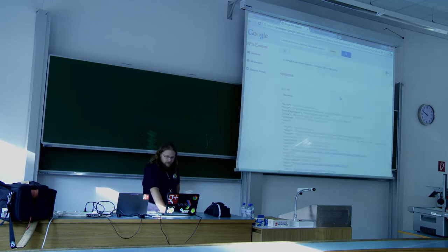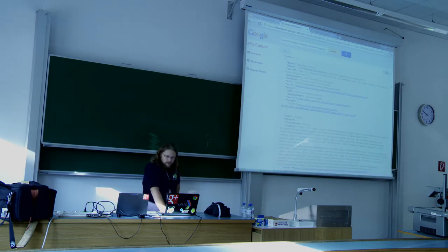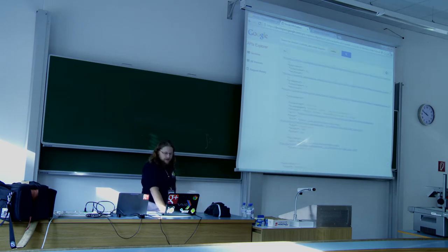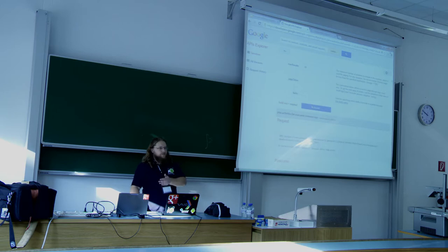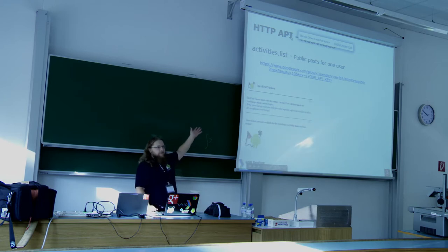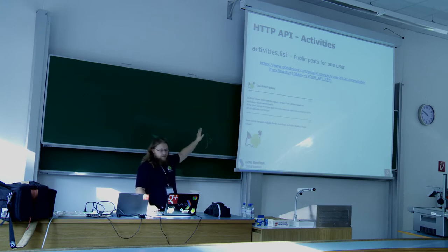When you execute this request you get a list of items — each item is a Plus activity. In this case I posted about the DevFest day yesterday. You see who posted it, the whole contents of the post, the number of plus ones, and any attachments. To get all the information visible in a Google Plus post you'd get it through the API. You can use this to render your recent activity on your website, since there's no widget for it — but it's really simple to build one.